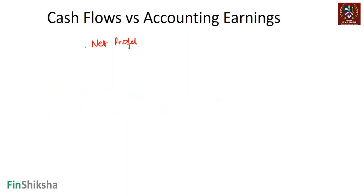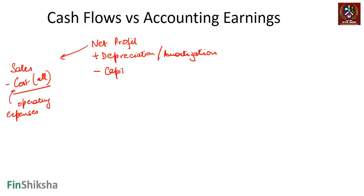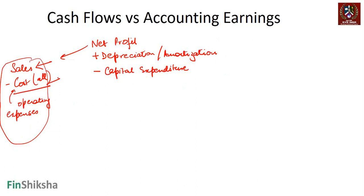Starting from accounting earnings, that's net profit: sales minus all costs. Net profit has already had depreciation subtracted, which is not actually a cash outflow, so you add depreciation or amortization back. The costs only include operating expenses and do not include capital expenditures — so you must subtract capital expenditures separately. For example, if we buy a car for five lakh rupees, that amount is not in costs at all and must be listed under capital expenditure.